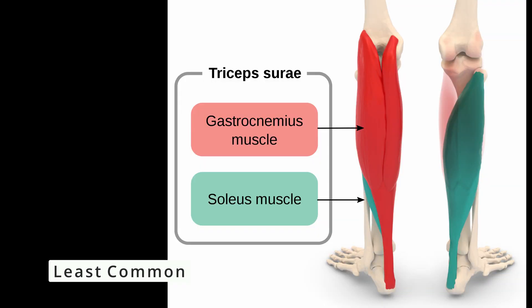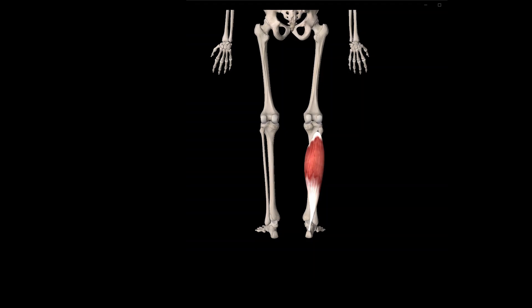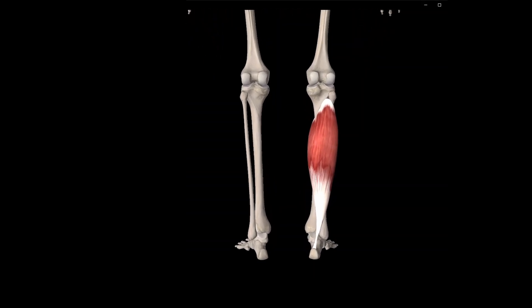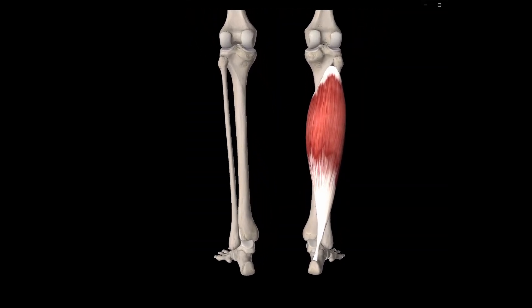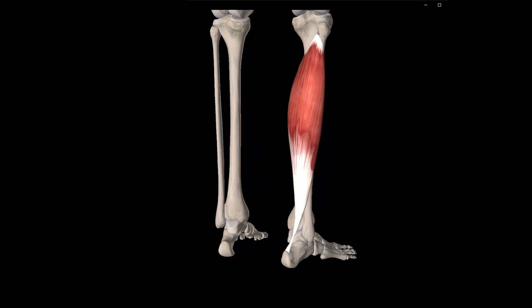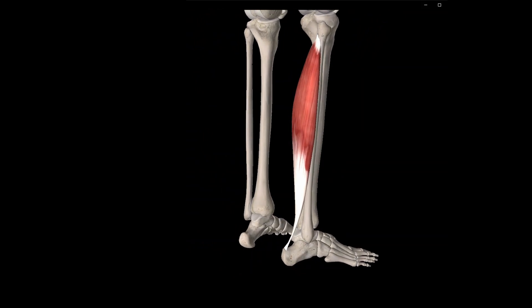The least common type of hammer toe deformity is flexor substitution. We most commonly see this type of hammer toe deformity when there is a weak triceps surae. Flexor substitution occurs when the triceps surae muscle group is unable to effectively plantar flex the foot during propulsion.